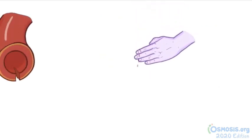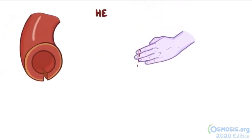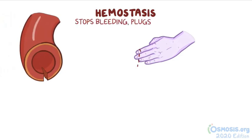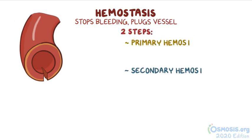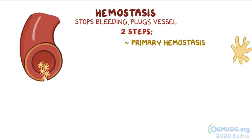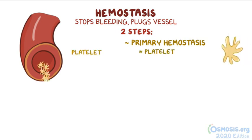Normally, when there is any kind of damage to the blood vessel, hemostasis occurs, which is the process that stops the bleeding and plugs the damaged vessel to limit blood loss. There are two steps: primary and secondary hemostasis. During primary hemostasis, platelets aggregate to form a plug at the site of the injured blood vessel.